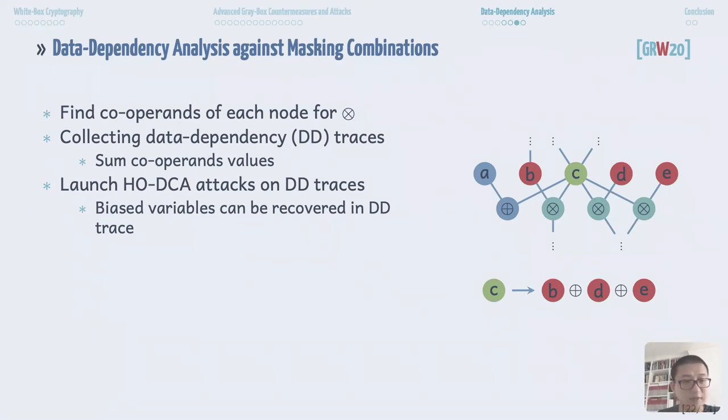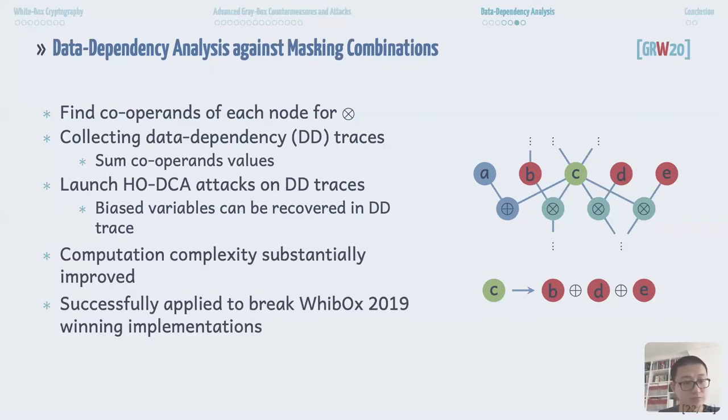Note that if there is some noise in the set of co-operands for AND operation, we could simply enumerate the sum of all subsets of the co-operand set. This attack would substantially improve the computation complexity by avoiding obtaining high order traces, which is exponential complexity in terms of linear masking order. We use this data dependency attack to break all three winning implementations from WhibOx 2019.